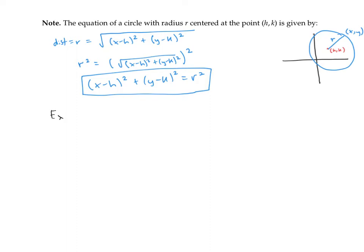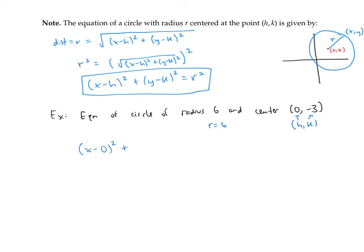For example, if we want the equation of a circle of radius six and center at the point zero, negative three, then we have r equals six and our center h, k is zero, negative three. So plugging into the formula, we have x minus zero squared plus y minus negative three squared equals six squared, or simplified, x squared plus y plus three squared equals 36.